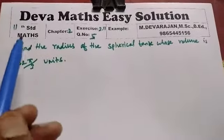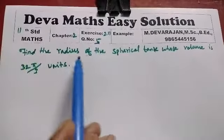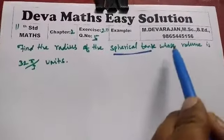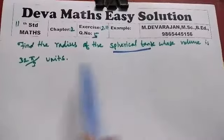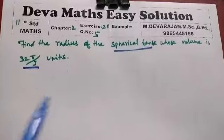Hi students, this is Deva. Now you are going to see 11th Standard Maths, Chapter 2, Exercise 2.11, Question 5: Find the radius of the spherical tank whose volume is 32π/3 cubic units.